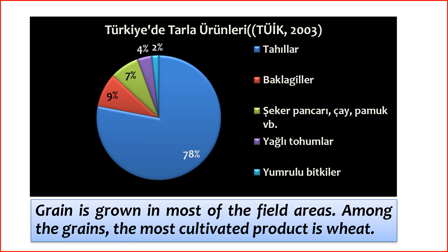Cereals, other plant products, and fruits experienced an increase compared to the previous year. In 2022, there was a 14.6% rise in production amounts of grains and other plant products, excluding feed plants, and a 7.7% increase in fruits, beverages, and spice plants compared to the previous year. However, there was a slight decrease of 0.5% in vegetable production. Consequently, production amounts in 2022 reached approximately 70.2 million tons for grains and other plant products, 31.6 million tons for vegetables, and 26.8 million tons for fruits, beverages, and spice plants.